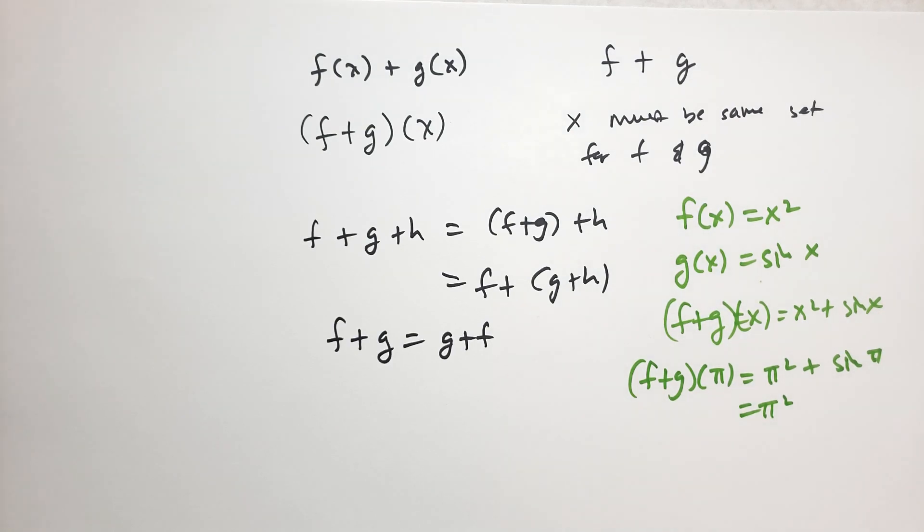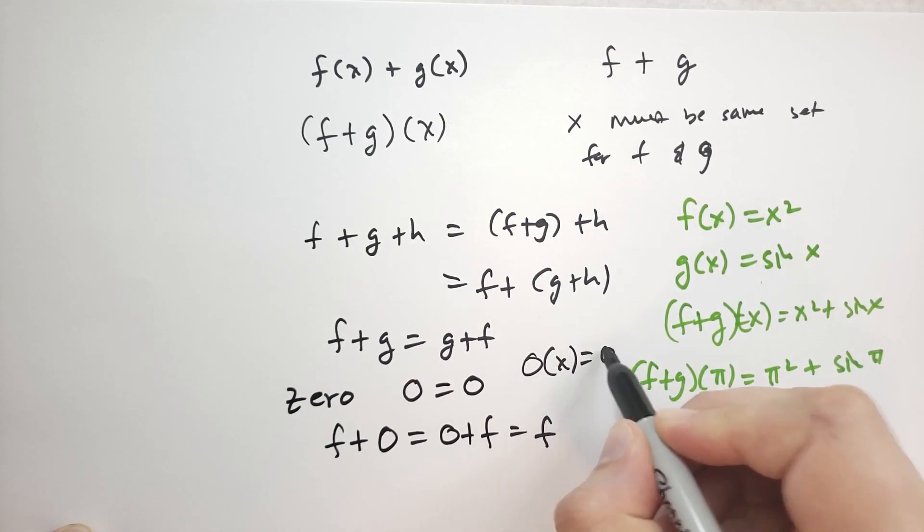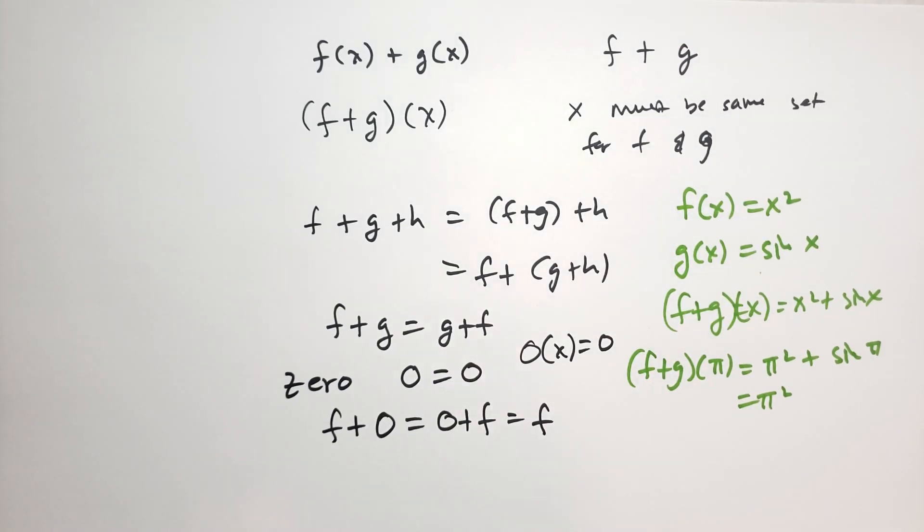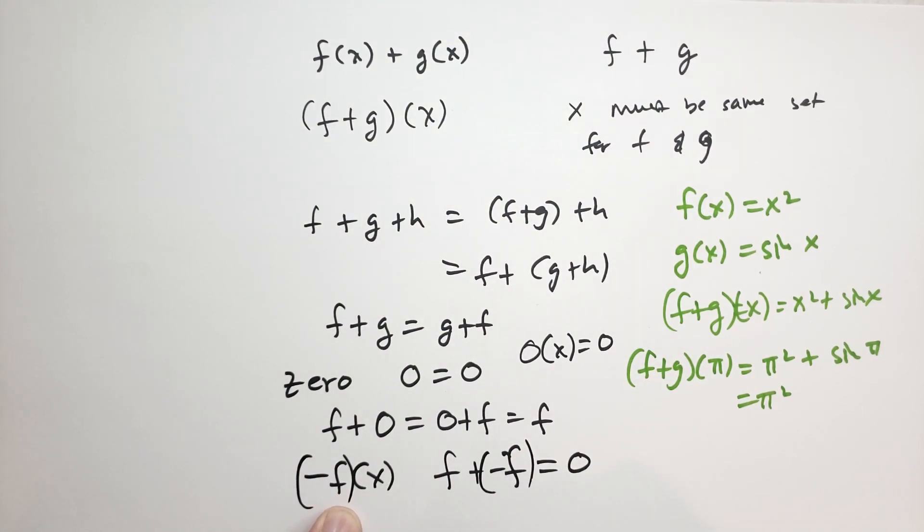We also have a zero function, which we'll conveniently use a symbol zero for, such that f plus zero is equal to zero plus f is equal to f. And so the zero function is just zero for all values of x. So zero of x is just zero. That's the definition of the zero function. We have the inversion. We can define minus f of x to be the negative of whatever that is, with the result that f plus minus f is equal to zero. So the minus function is defined to invert the sign of all of the results.